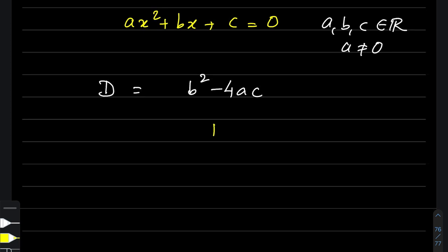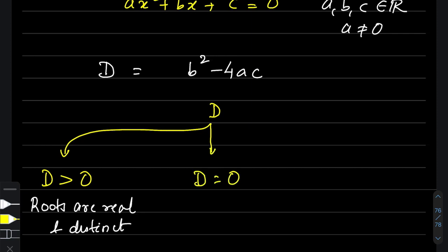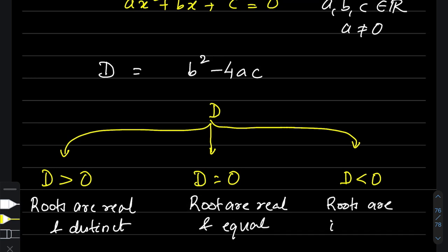If the discriminant is positive, the roots of the quadratic equation are real and distinct. If the discriminant is equal to 0, the roots are real and equal. And if the discriminant is negative, then the roots of the quadratic equation are non-real or imaginary.